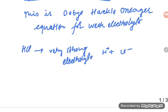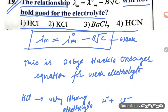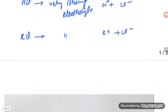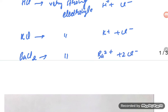Option two, KCl — this is also a very strong electrolyte, giving K⁺ and Cl⁻. Option three, BaCl₂ (barium chloride) — this is also very strong, giving Ba²⁺ and 2Cl⁻.